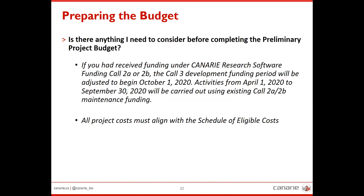Welcome to the finance portion. I'm going to start with preparing your budget. Is there anything to consider before completing your preliminary project budget? First, as Scott mentioned, if you have received funding under existing Calls 2a or 2b, the Call 3 development funding period will be adjusted to begin October 1st. Activities from April 1st to September 2025 will be carried out using existing Call 2a and 2b maintenance funding. All project costs must align with the Schedule of Eligible Costs, which you'll find in the call materials.